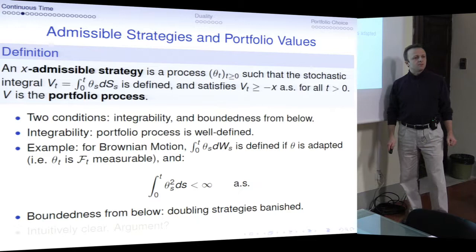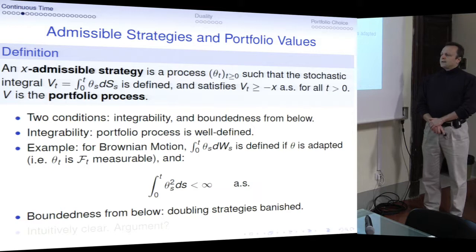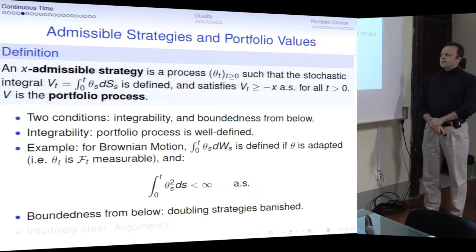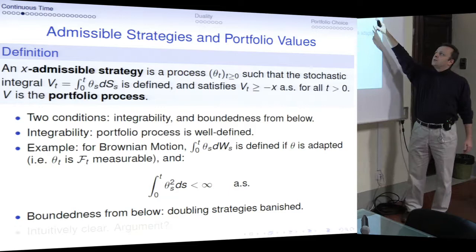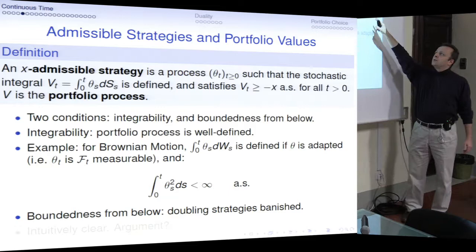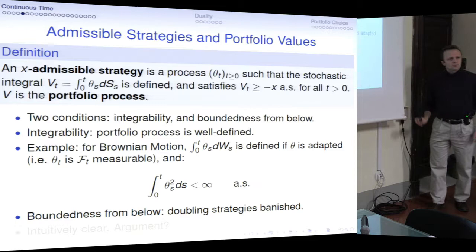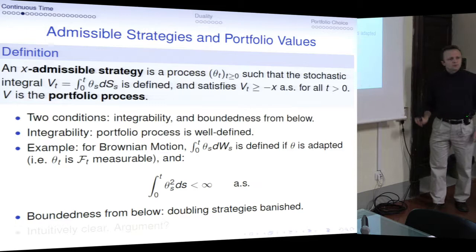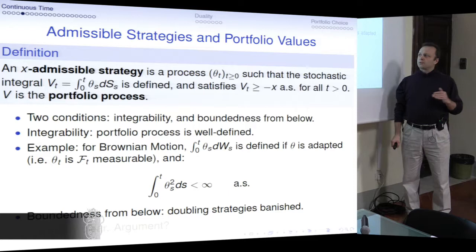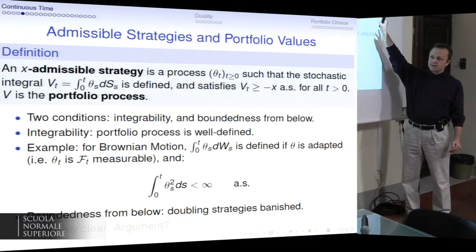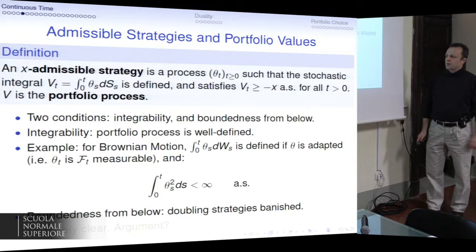The idea of this restriction — that the stochastic integral has to be bounded from below — is that with this condition we hope to eliminate any doubling strategy from the market. This means we hope to avoid any form of arbitrage when this is the definition of admissible strategy. We are going to see how this plays out with this definition.